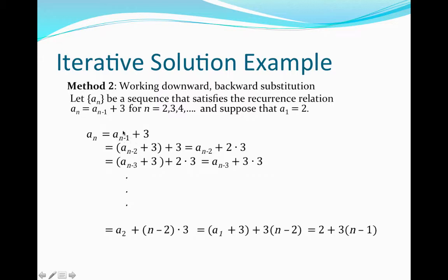We're going to start with our recurrence relation: a_n is equal to a_{n-1} plus 3. Then we're going to substitute in our formula for a_{n-1}. a_{n-1} will then be the previous term: a_{n-2} plus 3. So substituting that in for a_{n-1}, this plus 3 comes from the plus 3 at the end, giving us a_{n-2} plus 2 times 3. Continuing, we substitute in for a_{n-2} by subtracting one more from the subscript, getting a_{n-3} plus 3 plus 2 times 3, which becomes a_{n-3} plus 3 times 3.